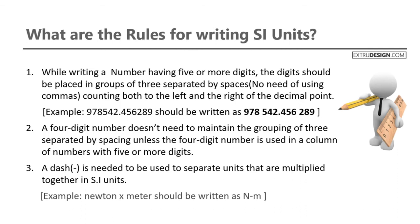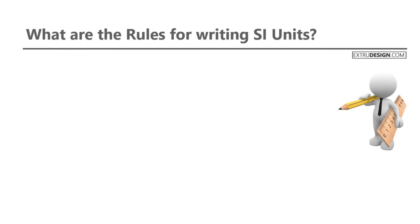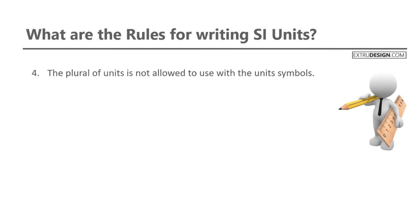For example, Newton meter should be written as N-m (N hyphen m), as shown here. The fourth rule of the SI system: plurals of units are not allowed to be used with unit symbols.